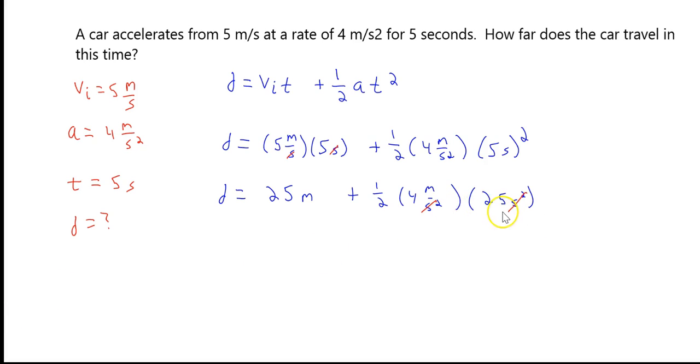It's easy to see the second squared cancel out, and we're left with meters. Now we're left with 25 meters plus one-half times 4 is 2 times 25 is 50 meters. Finally, our displacement is going to be 75 meters, or the distance we travel.